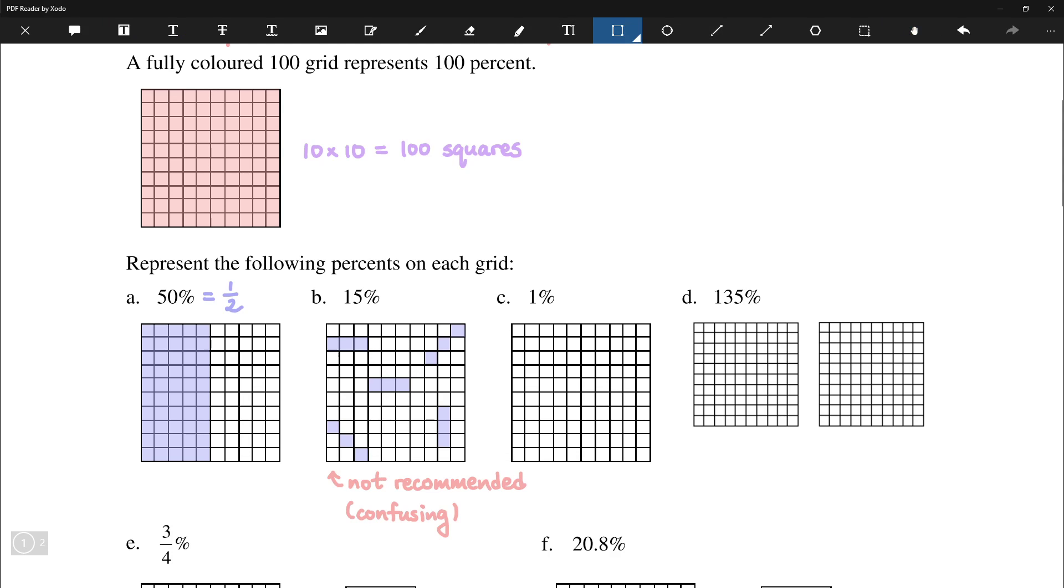Next up, we have 1%, so just 1 square out of 100. And finally, what happens if we have over 100%? Well, we have a full grid. So this is 100%, and then 35% more. And it will look something like this. And again here, here's the 35% in the second square. And the first square is completely full, so 100% there.